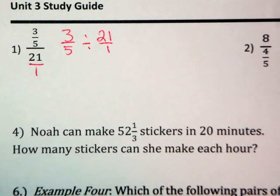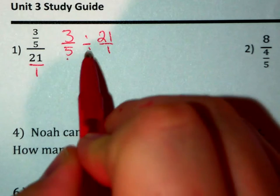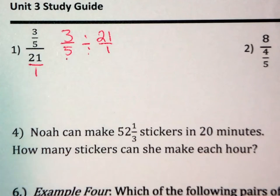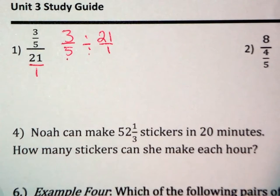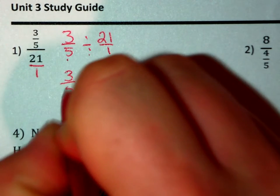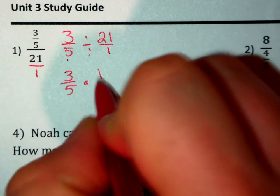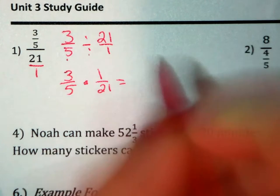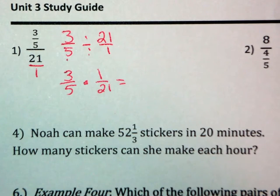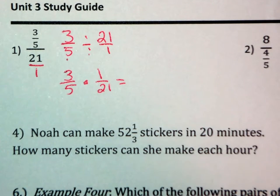Our rule for dividing fractions is that we keep the first term, change the sign, flip the second term, so that would become 3 fifths times 1 over 21. Some of you can simplify these fractions. For those of you that can't, we're going to continue to multiply straight across, and we'll simplify our solutions.